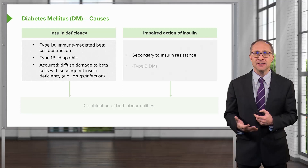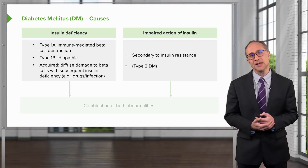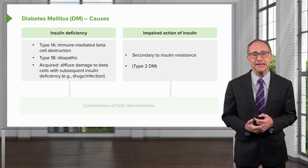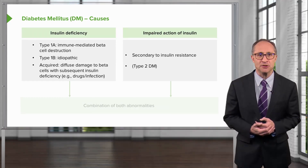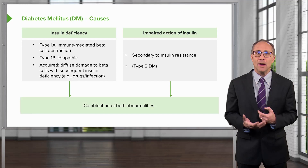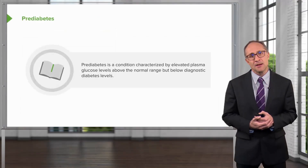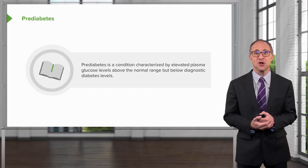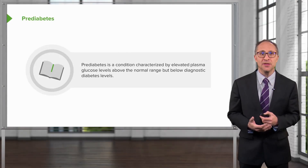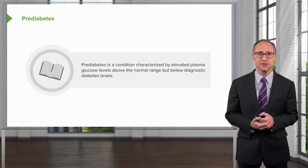Impaired action of insulin secondary to insulin resistance is the hallmark of type 2 diabetes, probably the most common form of diabetes encountered in medical practice. One can also get the combination of these two abnormalities. Pre-diabetes is defined as elevated plasma glucose levels below the diagnostic criteria for diabetes but above the normal range.